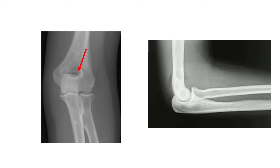This fossa is known as the radial fossa because during flexion of this joint, the head of the radius lies here. This is the capitulum, and the capitulum articulates with the head of the radius.